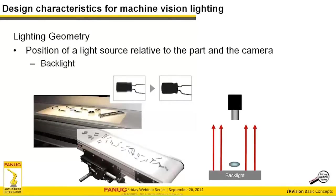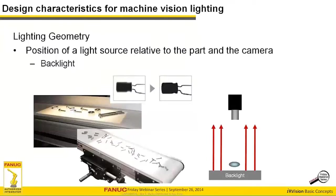One important consideration with backlighting: light will bend around an object — it diffracts. The image on the left shows a small electrical component without light diffraction; the image on the right shows one with illumination diffraction. This will happen, and there are high-end telecentric and collimated illumination devices that overcome diffraction to some extent, but you need to be aware that this is the kind of image you'll get with most backlit applications.